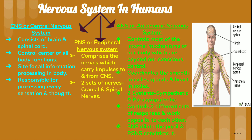Two systems come under the autonomic nervous system: the sympathetic and the parasympathetic nervous system. These control two different sets of responses and work opposite to each other. For example, the sympathetic nervous system dilates the pupil as we see a dim light, and the parasympathetic nervous system constricts it. These two systems act against each other — they are opposite to each other.